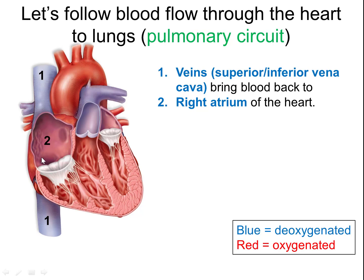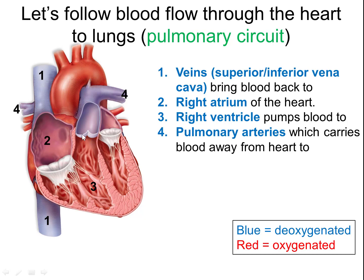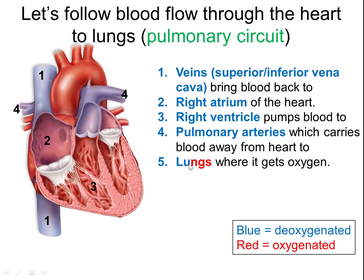The blood enters the right atrium, then goes through a valve into the right ventricle. The right ventricle pumps the blood through another valve, through the pulmonary trunk, and out through the pulmonary arteries — some on the left side and some on the right side. Arteries carry blood away from the heart, so here the blood is leaving toward the lungs. At the lungs, you breathe in oxygen — that's where the blood picks up oxygen. Notice the color change from blue to red.